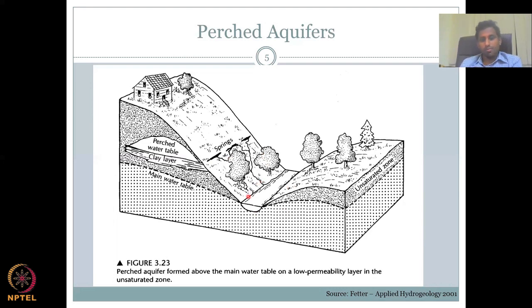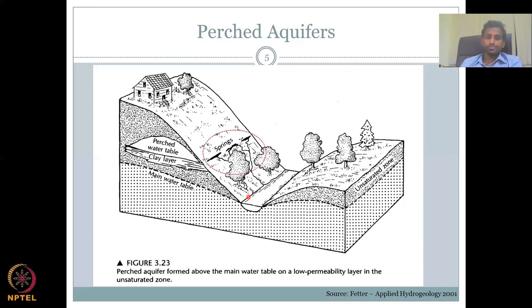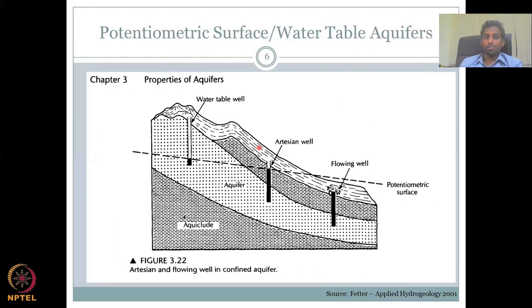The perched aquifer forms above the main water table on a lower permeability layer in the unsaturated zone.